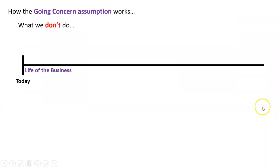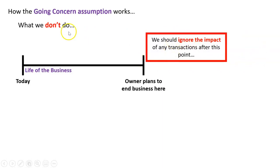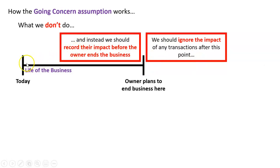So how it works — let's look at what we don't do first. Here's today, and here's the life of the business. Let's say this owner intends to end the business here — they might want to retire, sell it, or they think it'll go broke. What would happen then is all the transactions that would have occurred after that point, or their impact — well, we would say, let's ignore all those.